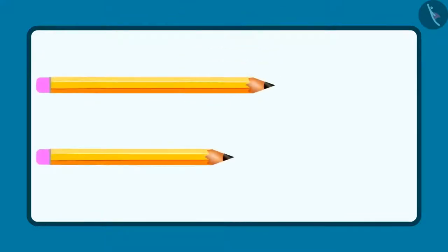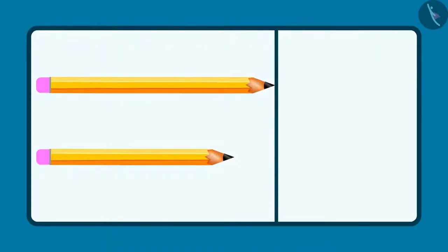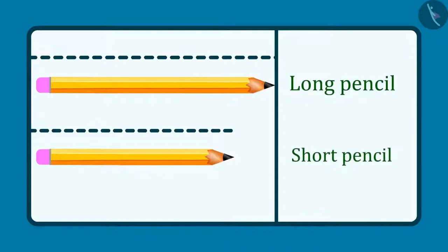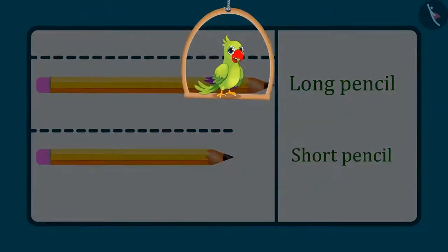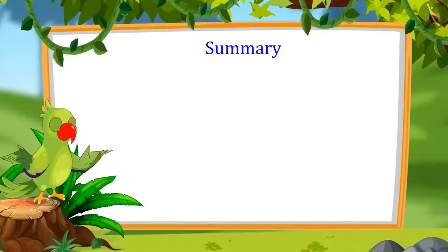So kids, can you also identify the long object and the short object out of two objects? Come, let's see. These are two pencils. Now tell me, out of these two, which one is the long pencil and which one is the short pencil? Yes, out of these two, this pencil is long and this pencil is short. Even you had the same answer. Right? Great!